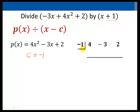The c goes in a little square box to the left of the coefficients of our polynomial 4, negative 3, and 2 and we then begin the division process by bringing down the 4. Negative 1 times 4 is negative 4. Negative 3 plus negative 4 is negative 7. Negative 1 times negative 7 is 7. 2 plus 7 is 9.